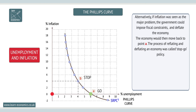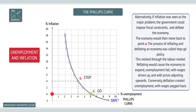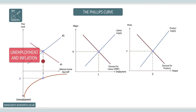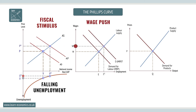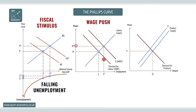So, what's going on? The belief was that the policy worked through its effect on the labour market. Reflating would cause the economy to expand, unemployment to fall, with wages and prices being driven up. Conversely, deflation created unemployment, with wages pegged back.